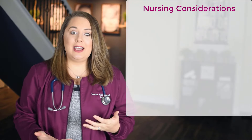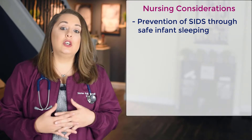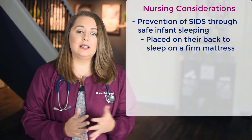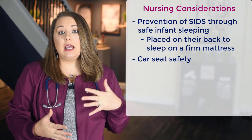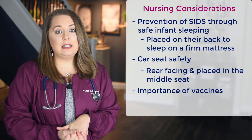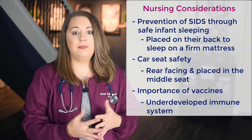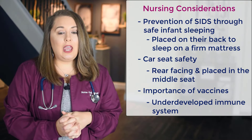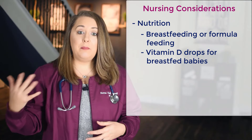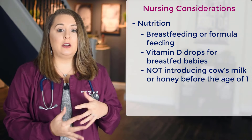Some important nursing considerations during this age include educating parents on prevention of SIDS through safe infant sleeping — infants should always be placed on their back to sleep on a firm mattress. Also educate on car seat safety — it needs to be rear-facing and placed in the middle seat. Education on the importance of vaccines is also key, as infants are highly susceptible to diseases due to their underdeveloped immune system. Assess and educate on nutrition, encouraging breastfeeding or formula feeding, supplementing with vitamin D drops for breastfed babies, and not introducing cow's milk or honey before the age of one to prevent infant botulism.